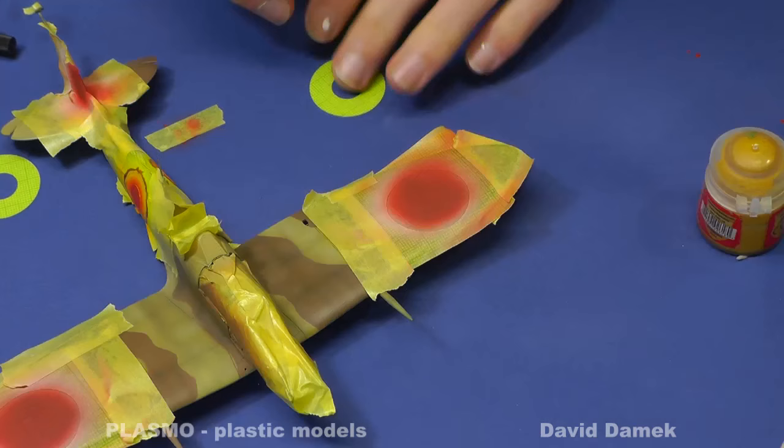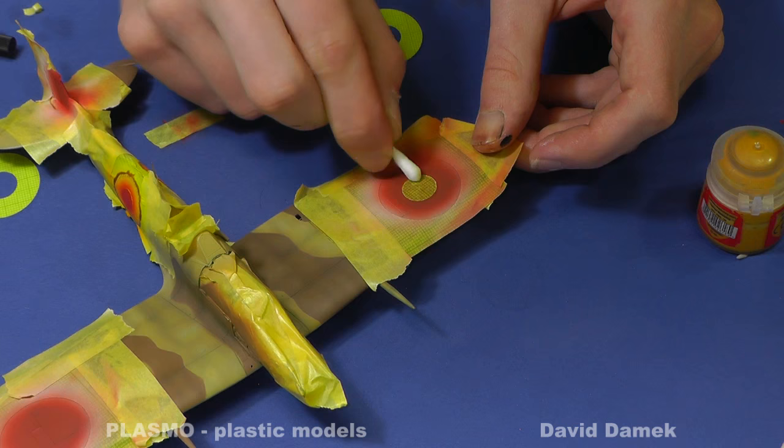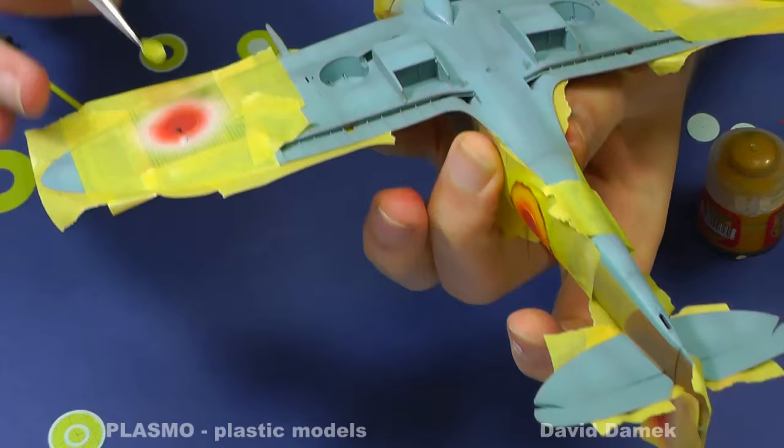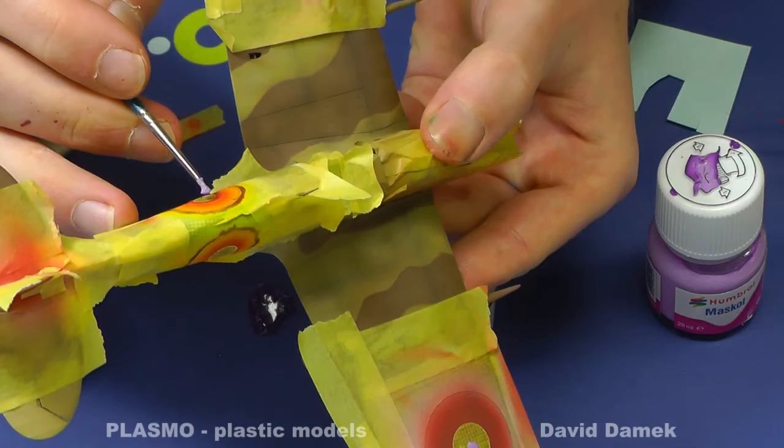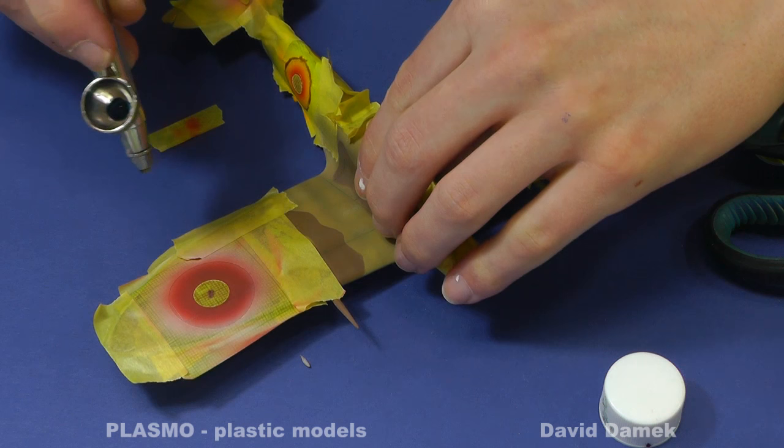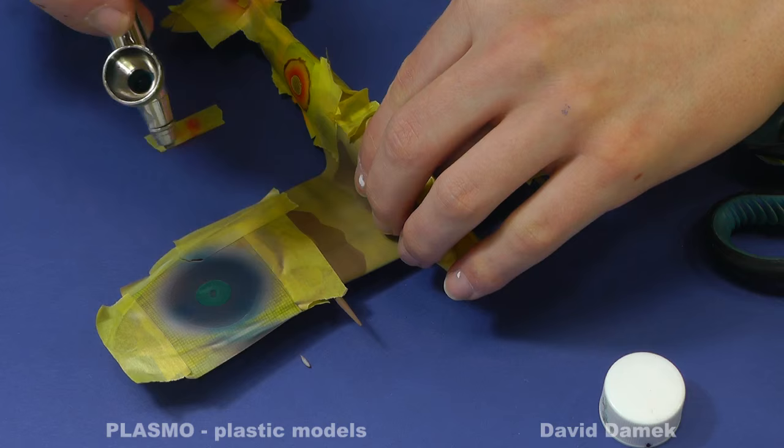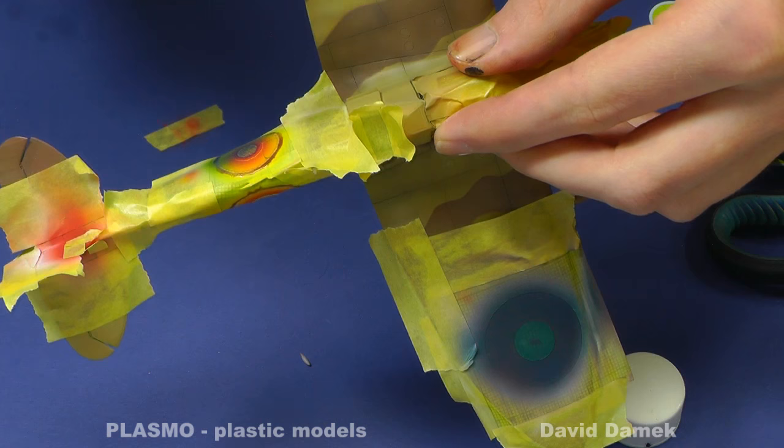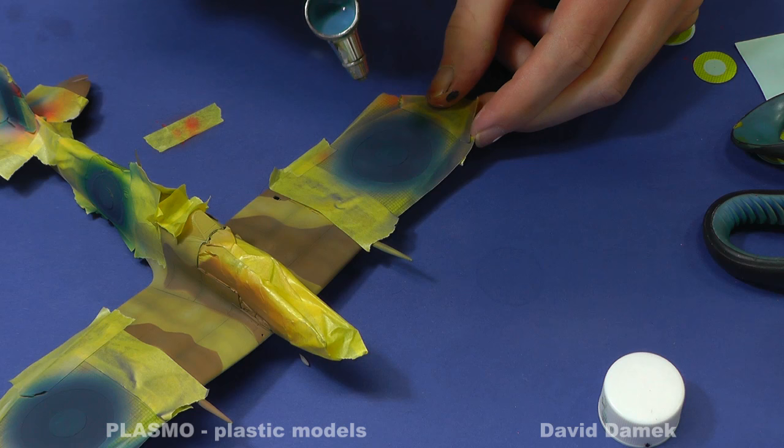The main roundel on the wing consists of two parts, so I put the last piece of the puzzle. I smooth it again with a cotton swab. Now I finish all roundels with blue color. Another advantage of painting roundels is that you can make easy pulse shading.